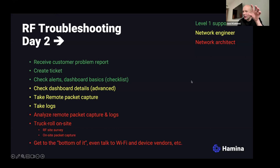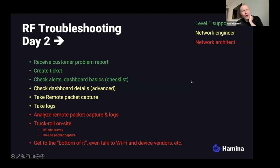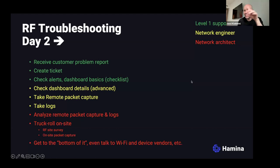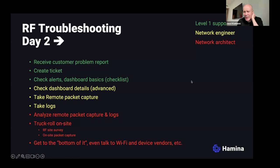For small carpeted spaces a truck roll might not make sense, but deploying a factory, warehouse, hospital, or hotel without a validation survey is risky. Hotels in the US and northern/central Europe typically have good Wi-Fi because the budget is bigger; holiday resorts without structured processes often have degraded Wi-Fi.